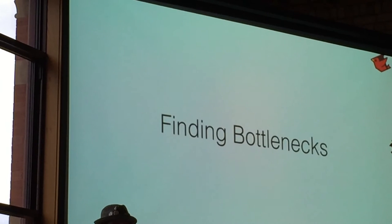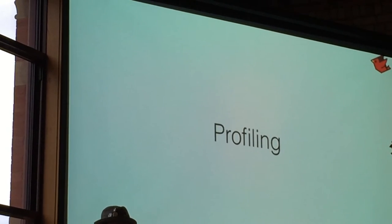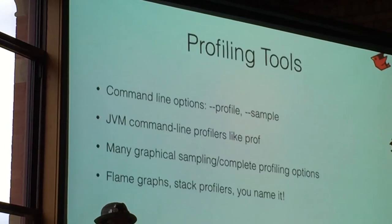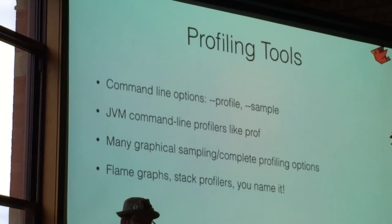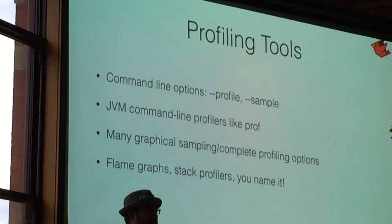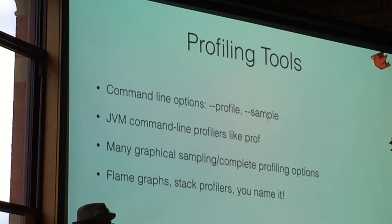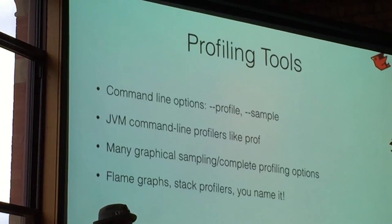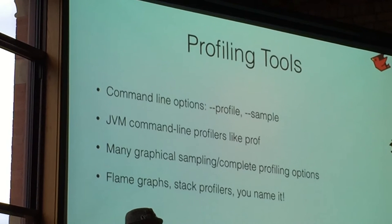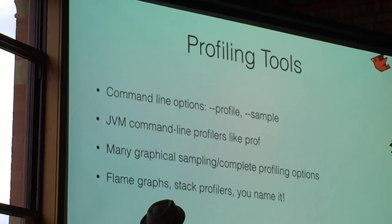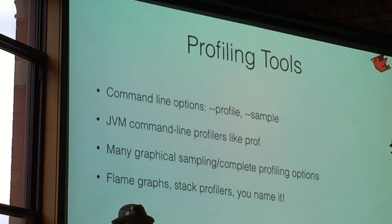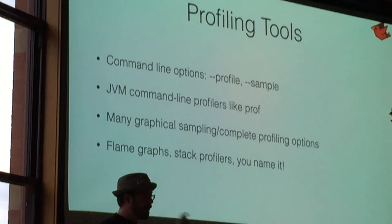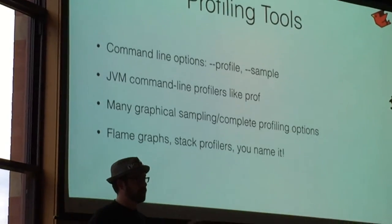Okay, so actually finding bottlenecks in the application. We'll talk a little bit about profiling and what options we have on JRuby. So on JRuby, we have some command-line profiling options. --profile is a Ruby-level time profiler — it shows actual time spent in Ruby methods. --sample is a JVM-level sampling profiler. So periodically it just pings the runtime to see where it's at and then tallies those up. If you're spending a lot of time in this method, well maybe that's an expensive method.